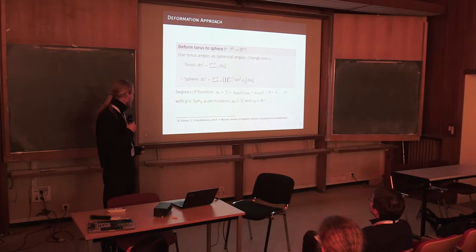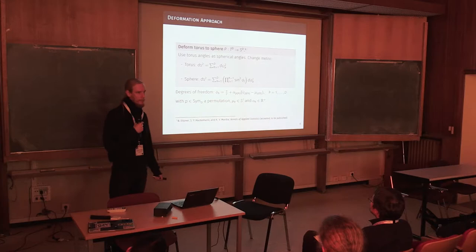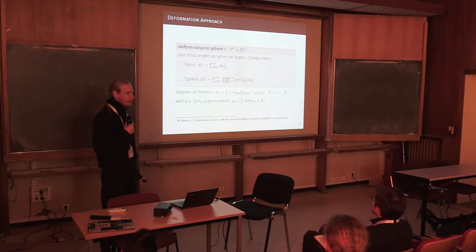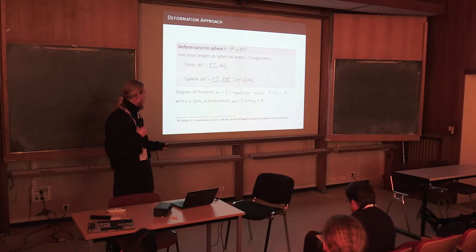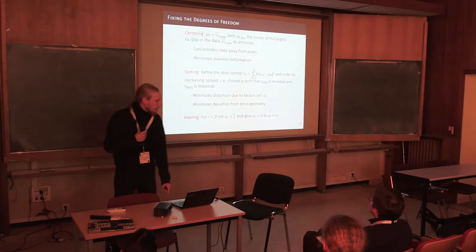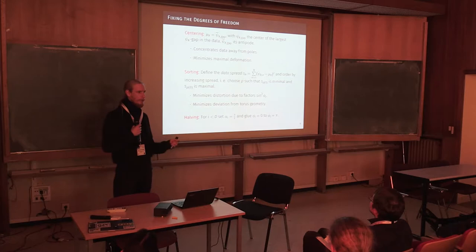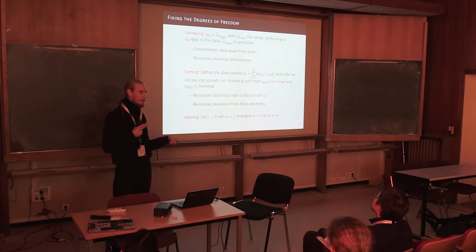We might be forced to rescale them because spherical angles, all except the innermost, run only from zero to pi and not from zero to two pi as the torus angles. And also, we might want to permute the circles so as to avoid large deformation through this pre-factor of the sine. Now, here I state all these degrees of freedom, and now I will explain how we fix them.